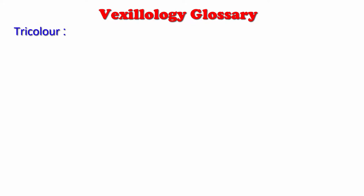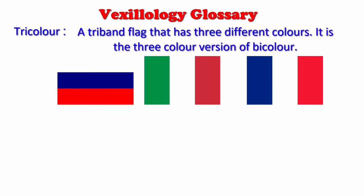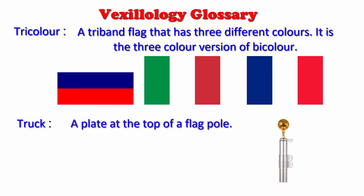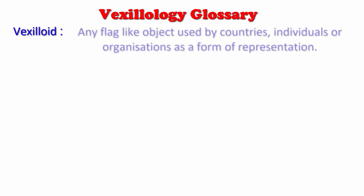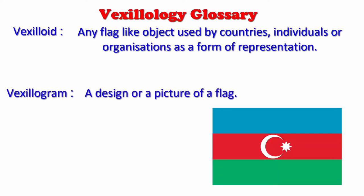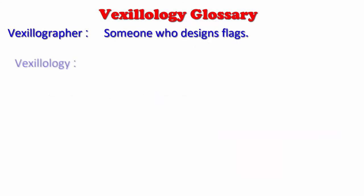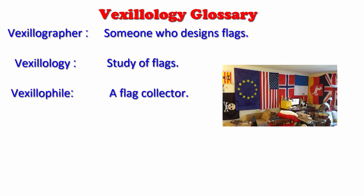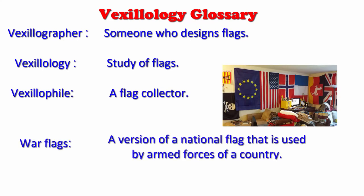Tri-Color: a tri-band flag that has three different colors — the three-color version of bicolor. Truck: a plate at the top of a flagpole. Vexilloid: any flag-like object used by countries, individuals, or organizations as a form of representation. Vexillogram: a design or a picture of a flag. Vexillographer: someone who designs flags. Vexillology: the study of flags. Vexillophile: a flag collector. War flag: a version of a nation's flag that is used by the armed forces of a country.